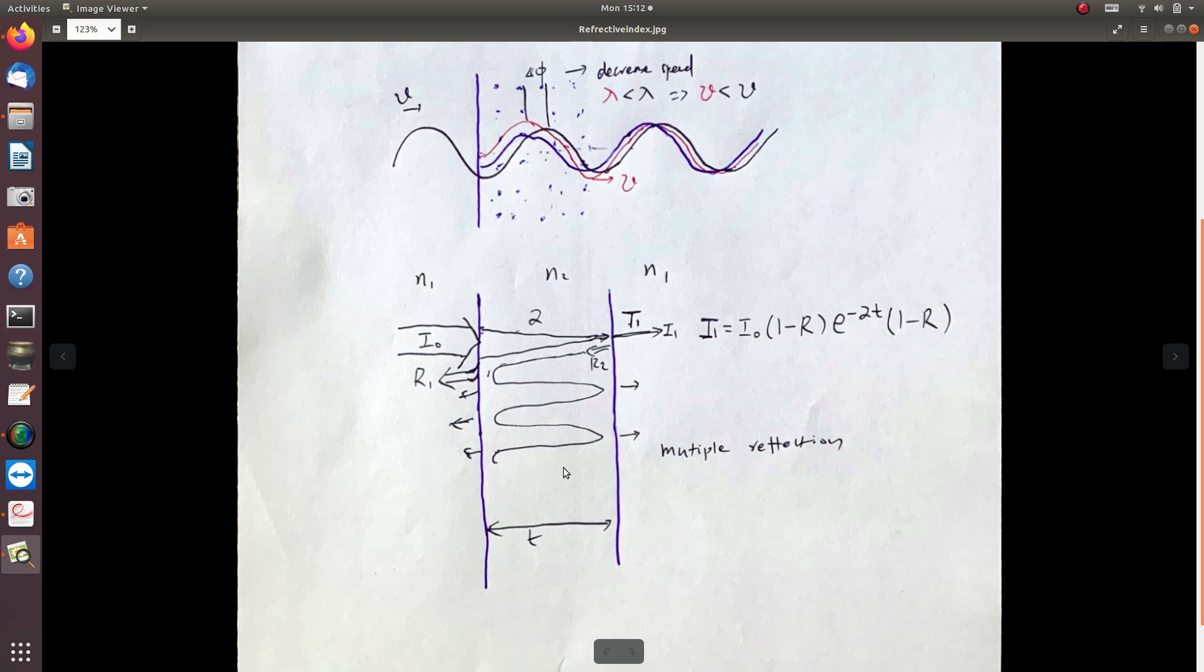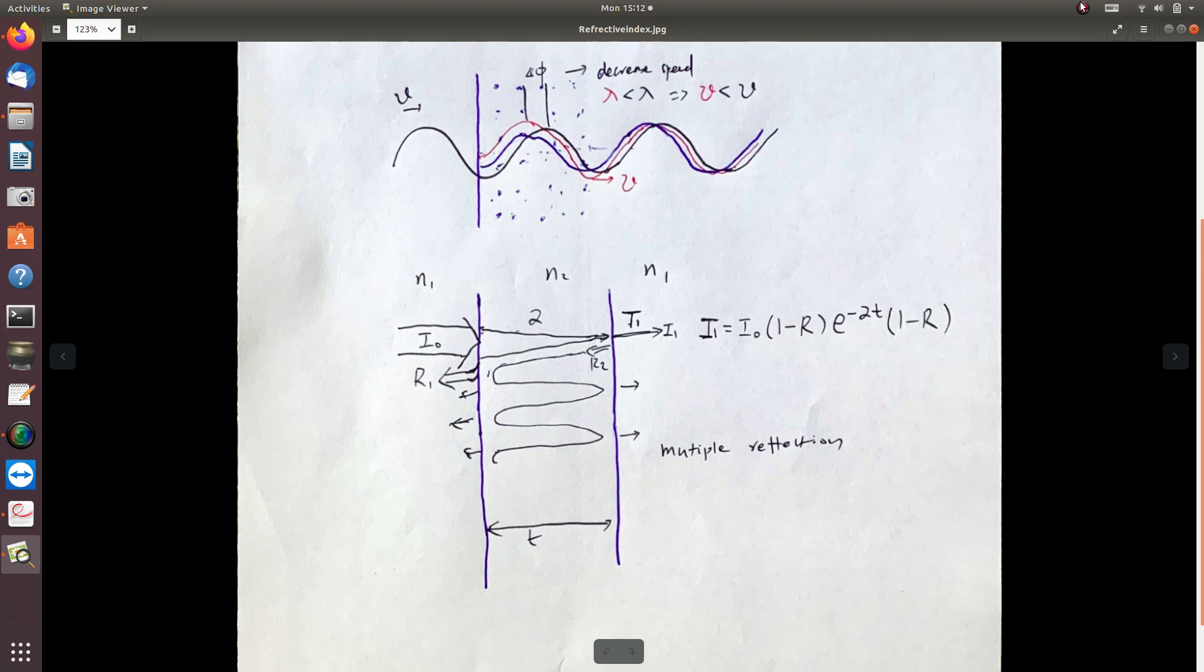If we have the reflectance, we can calculate the transmission of the light. We don't need to know the transmittance. The dipole concept helps us understand the propagation of light through media and explain these phenomena.